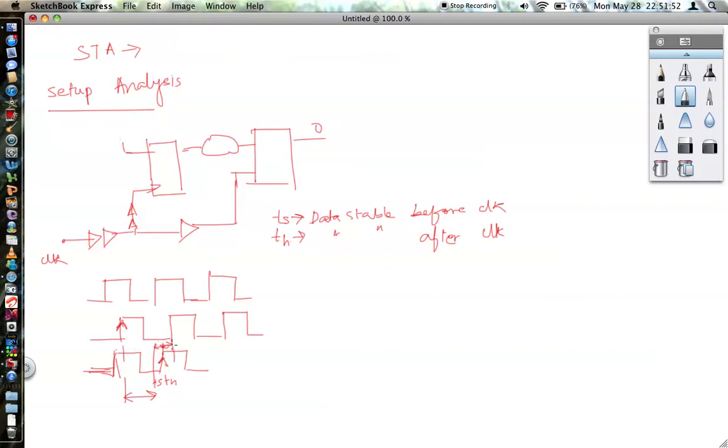Which is your clock period minus the T setup. Basically your data delay should be less than T clock minus T setup, so that it can be sampled correctly by the flop.